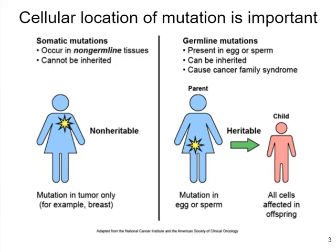When considering mutations, the cellular location is important. You can describe mutations as being somatic or germline. A somatic mutation is one that happens in a cell that is part of the non-germline or somatic tissue — for example, a mutation in a skin epithelial cell or a breast cell. That could be problematic for the health of the individual, but it's not something that the individual would pass on to their offspring.